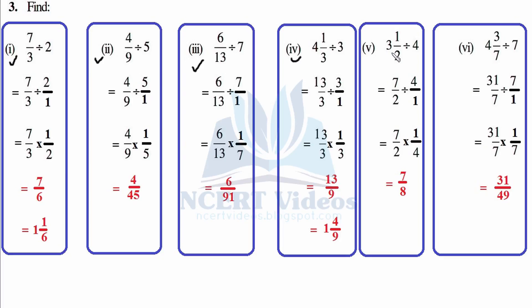3 and a half is converted to 7 over 2 — that is 3 times 2 plus 1 is 7 — divided by 4. Then 7/2 as it is, changing sign and flipping 4 to 1 over 4, it becomes 7 over 8 — proper.